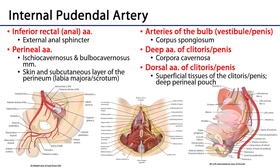When it exits from the pudendal canal — that space through the fascia of obturator internus — we see branches heading toward the external anal sphincter. These are the inferior rectal or inferior anal arteries. There are also perineal branches, which serve the ischiocavernosus muscles, the bulbocavernosus muscle, as well as some of the skin about the perineum.